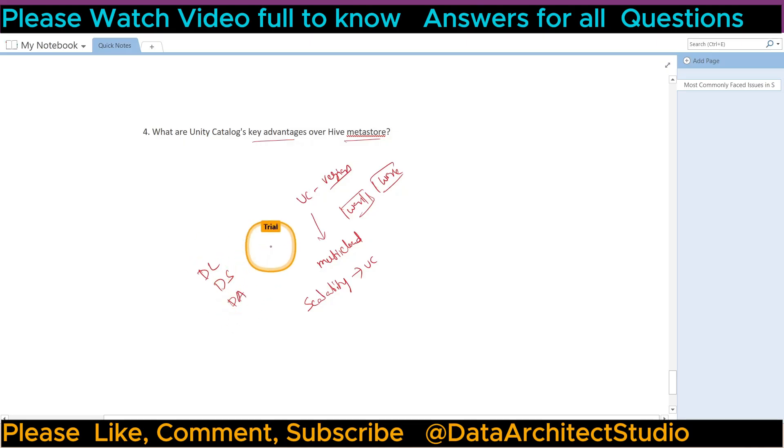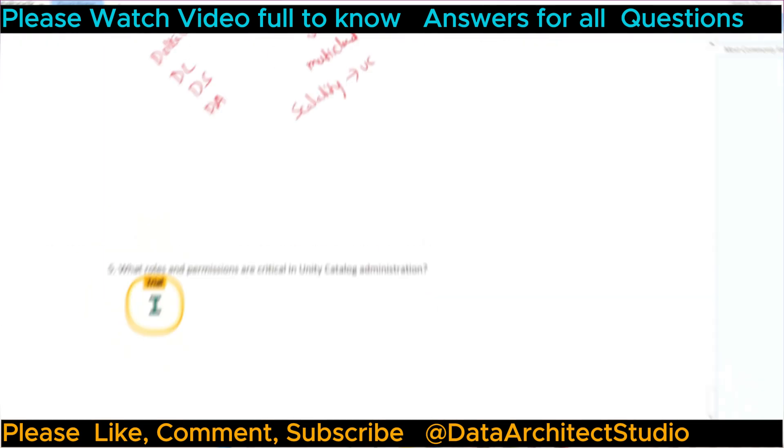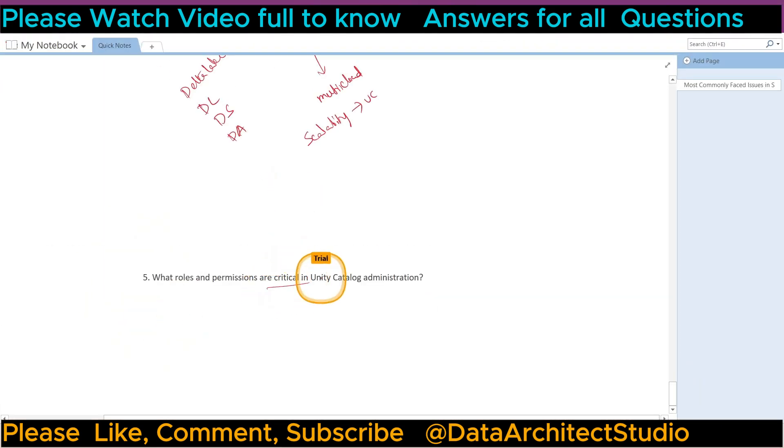So what are the roles and permissions that are critical in Unity Catalog administration? Right, so in the administration we have a few roles. One is like metastore admin. So metastore admin can have access related to the metastore level like you know metastore settings like storage access, sharing policies, SAS tokens, storage accounts and etc all those details. Next you can have catalog owners or schema owners. So these roles can have access to create or delete the objects inside this catalog or schema.